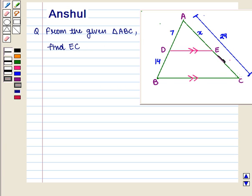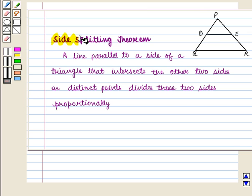We know that the side splitting theorem states that a line parallel to a side of a triangle that intersects the other two sides in distinct points divides those two sides proportionally.